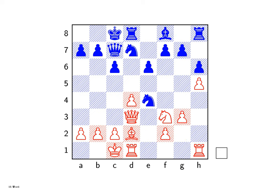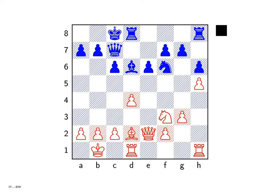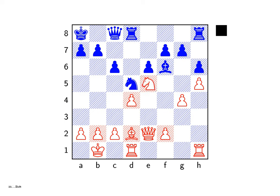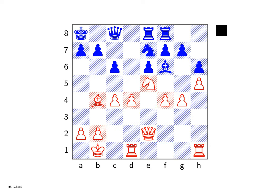Hawking starts with ancient Greek philosophers such as Aristotle and Ptolemy who proposed early models of the universe. Aristotle envisioned a geocentric, earth-centered universe with celestial spheres revolving around the earth. Ptolemy further refined this model in the 2nd century AD with his detailed geocentric system, which included epicycles to account for the observed irregularities in planetary motion.